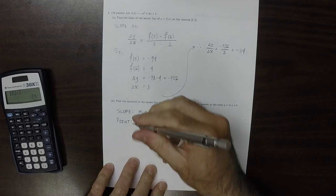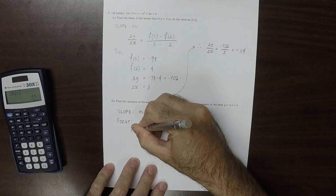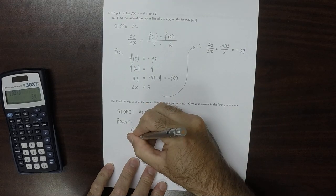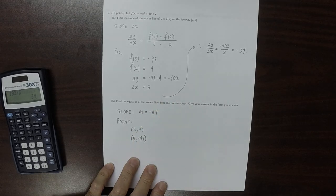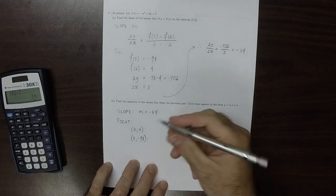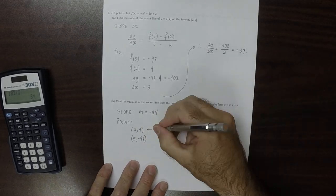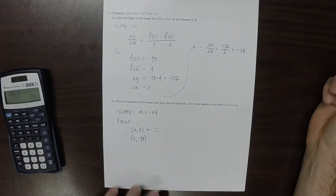We know that one of the points is 2 comma 4, and we know another point is 5 comma negative 98. Either of those points will work. I'll use this one because these numbers are smaller, but you could just as well use the other one.